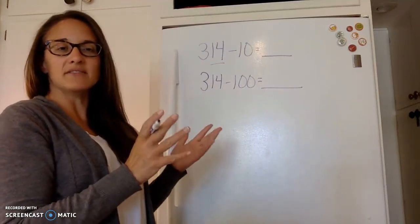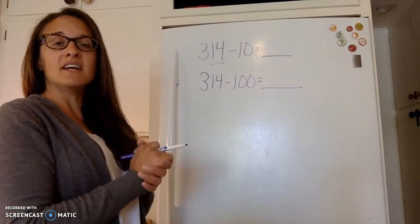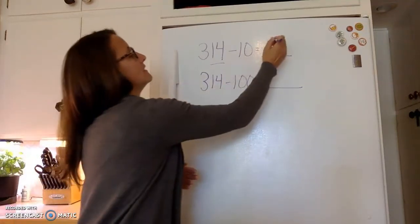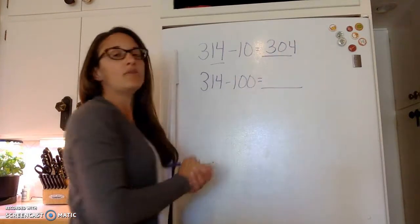One, two, three, four, five, six, seven, eight, nine, ten, eleven, twelve, thirteen, fourteen. What numbers came before that? The single digits. So 314 minus ten would be 304.